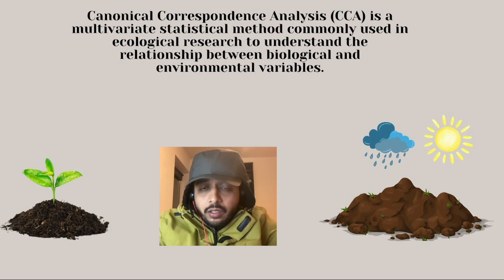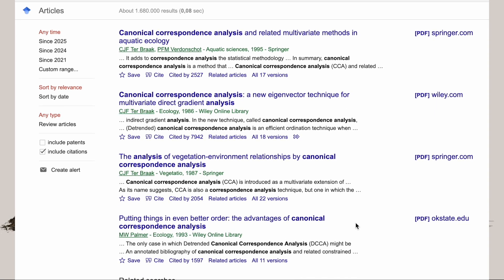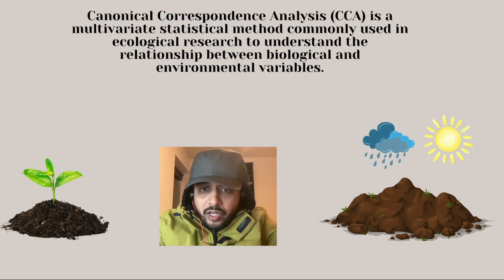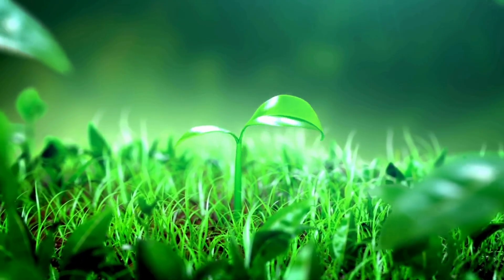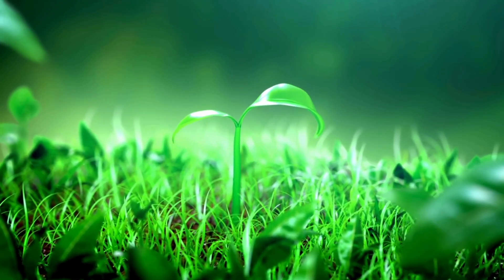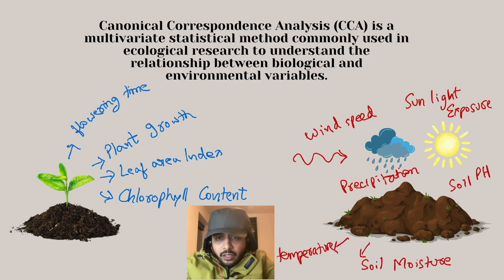Canonical Correspondence Analysis in ecology is very commonly used to understand complex relationships between biological variables of a plant — such as flowering time, plant growth, leaf area index, chlorophyll content, root growth, and other parameters — with environmental variables like wind speed, sunlight exposure, and soil moisture.